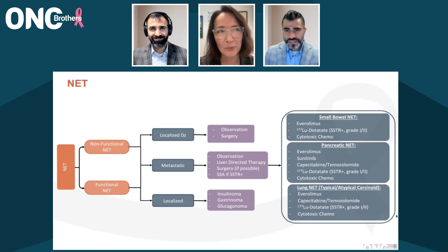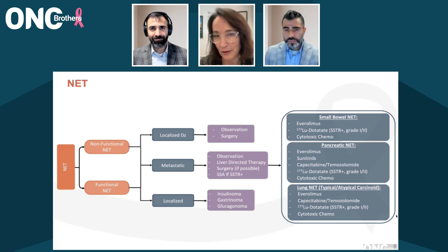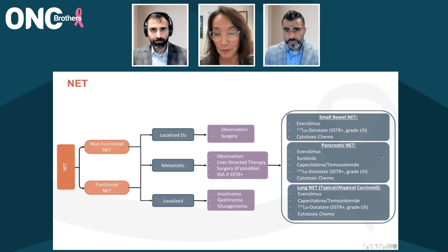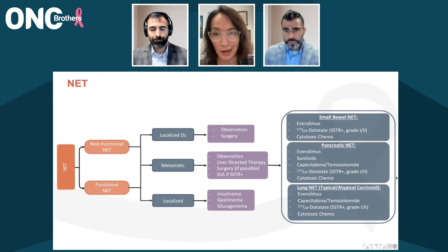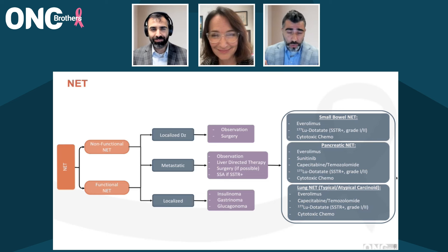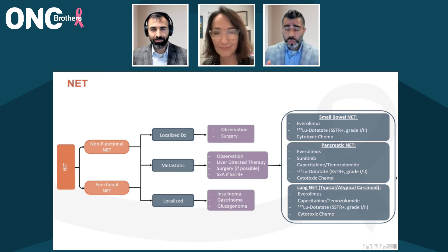Regarding test doses, there used to be a philosophy that you needed to give a short-acting octreotide test dose prior to giving long-acting. I think that's now fallen out of favor — these are very safe medications. For patients who need somatostatin analogs for relief of carcinoid syndrome — flushing and diarrhea — I may start with a short-acting, purely because I want quick relief, and start that simultaneous with a long-acting dose. Once the long-acting kicks in, they may not need the short-acting as much. For initiation of SSAs for tumor control, you don't need short-acting octreotide — you would just start from the get-go with either octreotide or lanreotide.